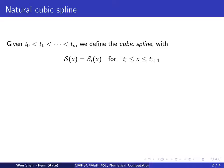We now look at cubic splines. So given a set of knots from T0 to Tn sorted, we define the cubic spline with the function Si defined piecewise on the interval from Ti to Ti plus 1.